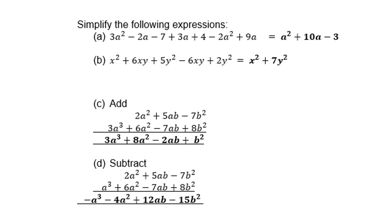Look at (c). 3a cubed is on its own. 2 plus 6 is 8a squared. 5 minus 7 is negative 2ab. And negative 7 plus 8 is plus 1b squared.